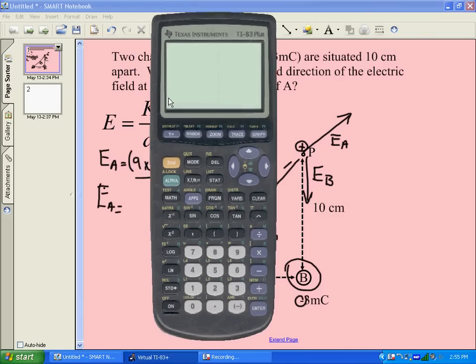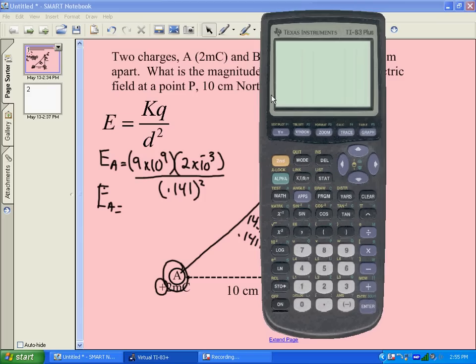So we'll bring up the calculator and take a look. We've got 9 times 10 to the 9, times 2 exponent negative 3, divided by 0.141 squared.